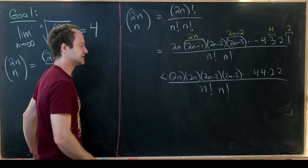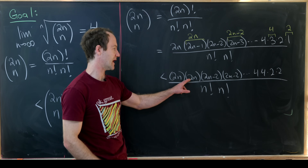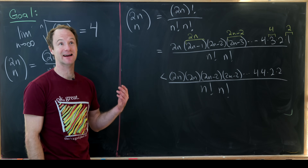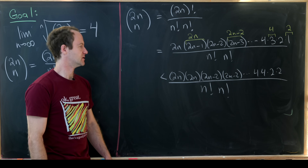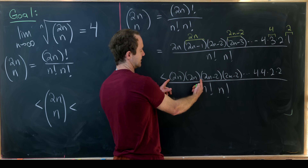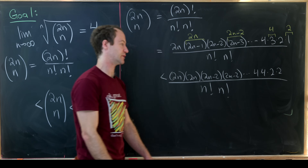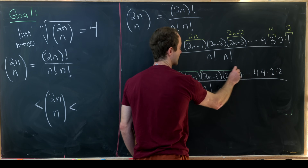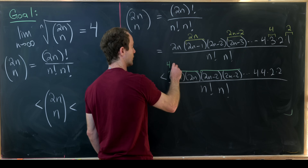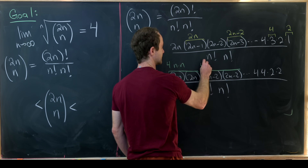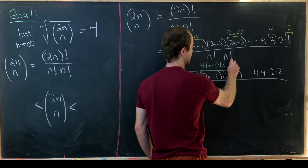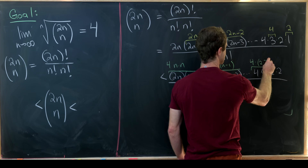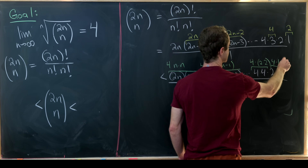Now we can factor a 2 out of every one of these terms. There are exactly 2n terms, so thinking of them as n pairs, we can factor a 4 out of each pair. This gives us: 4 times n times n, then 4 times (n minus 1) times (n minus 1), down to 4 times 2 times 2, and 4 times 1 times 1.